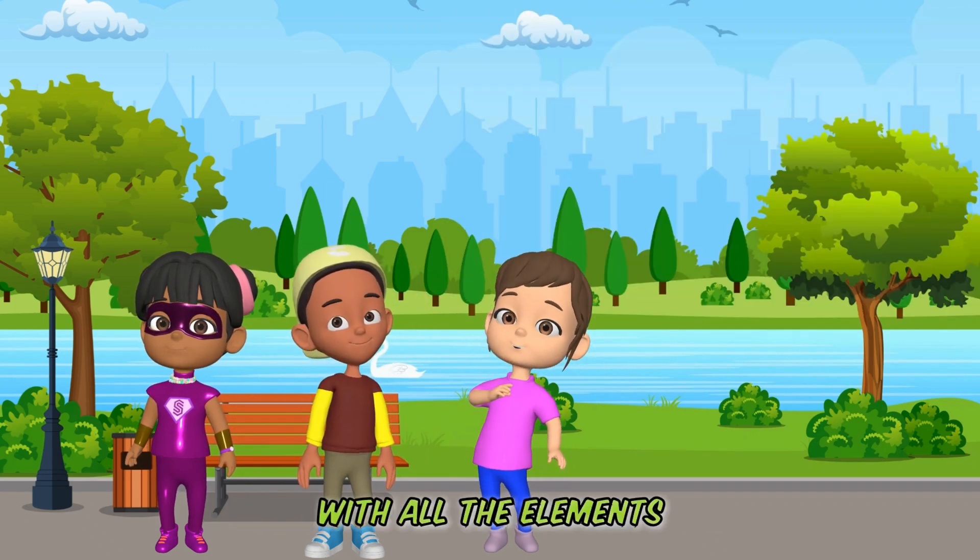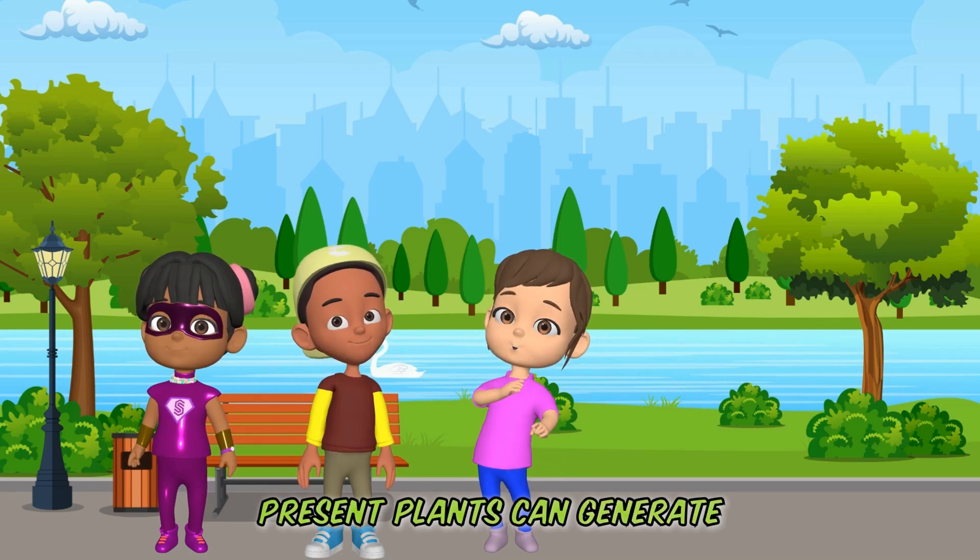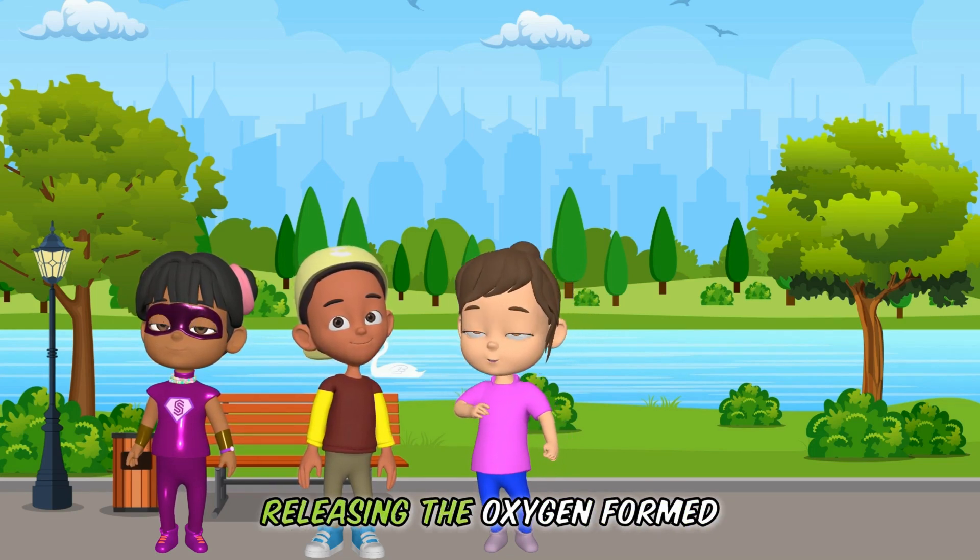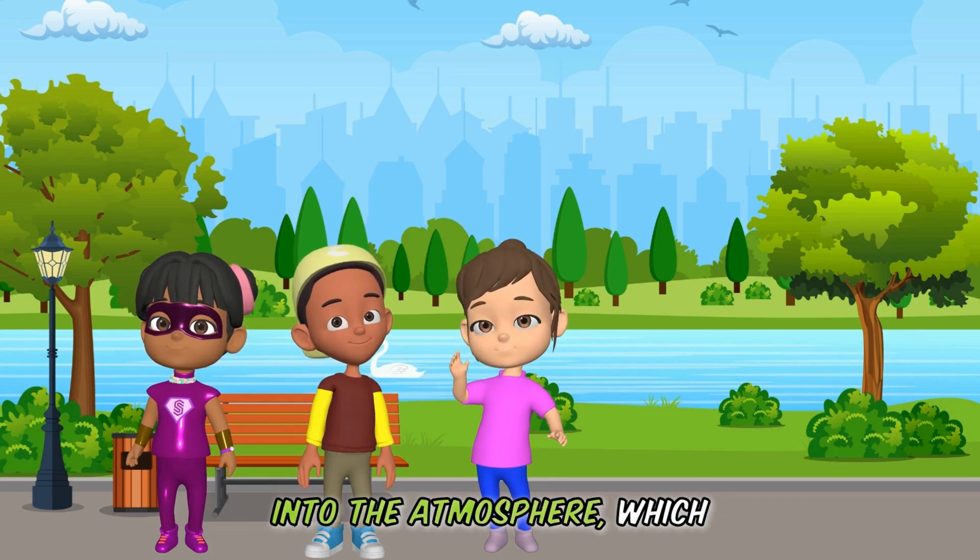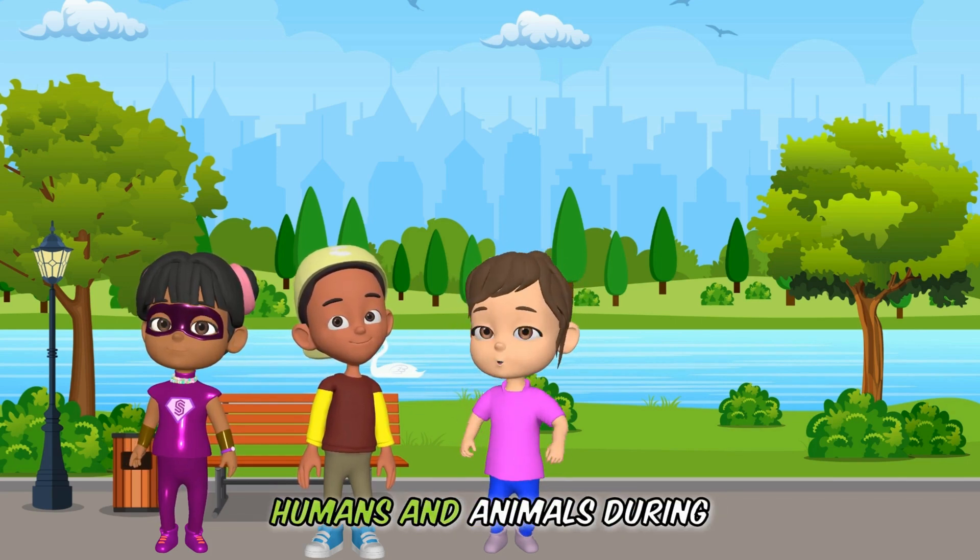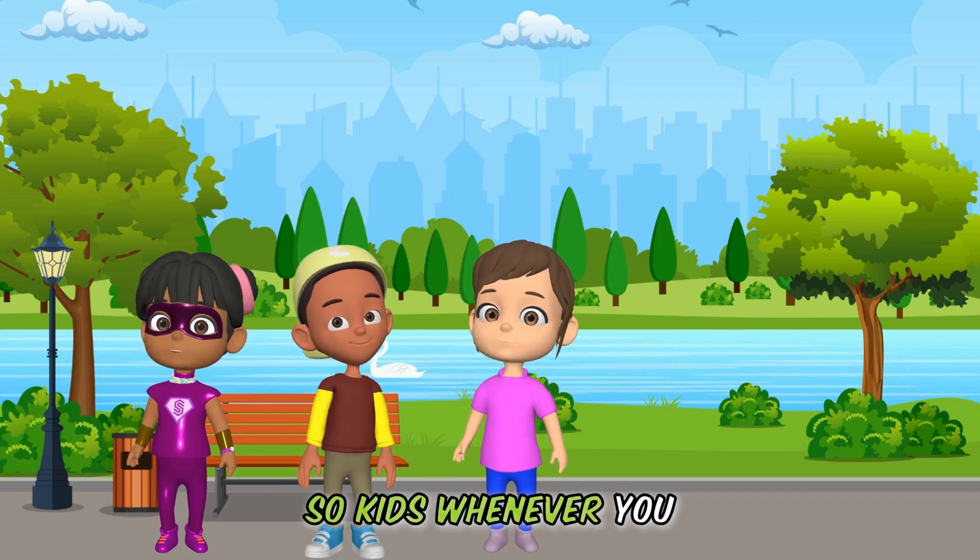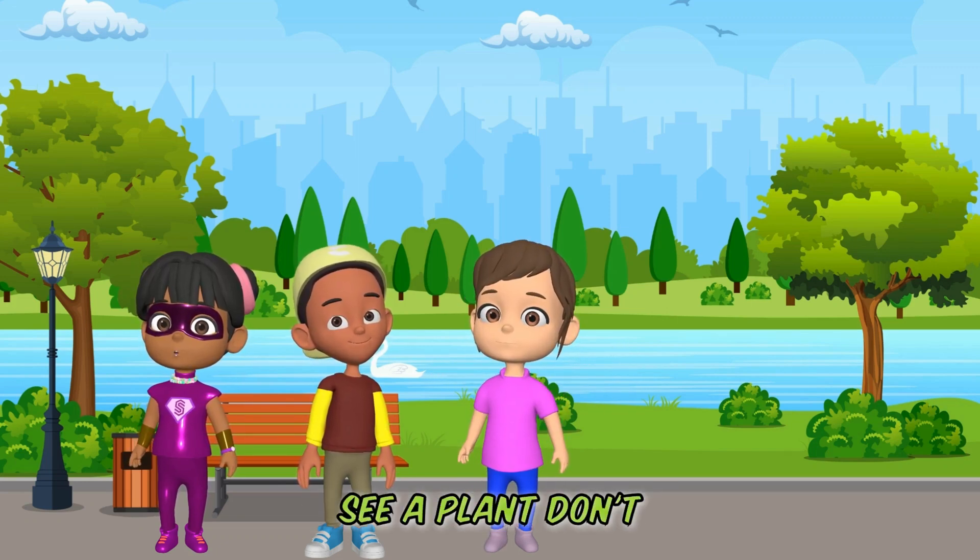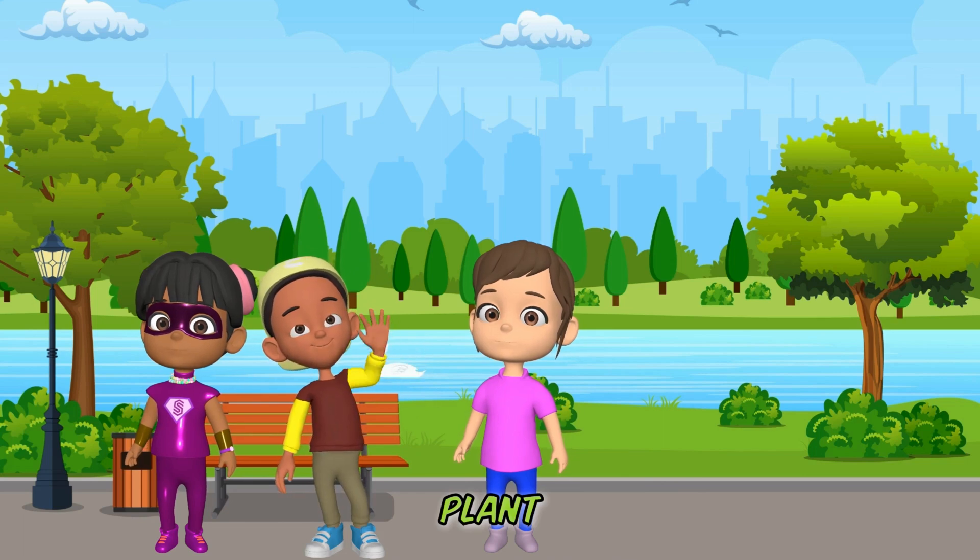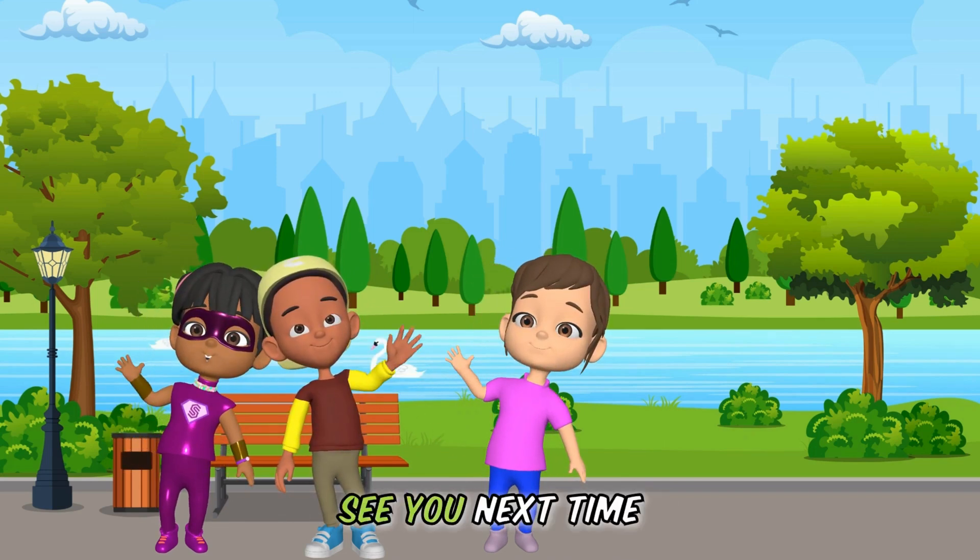With all the elements present, plants can generate their food in the form of sugar, while releasing the oxygen formed into the atmosphere, which is used up by humans and animals during respiration. So kids, whenever you see a plant, don't forget to tell the plant, thank you for giving us oxygen. See you next time, kids.